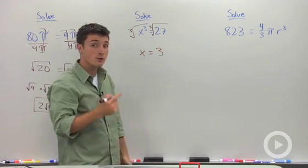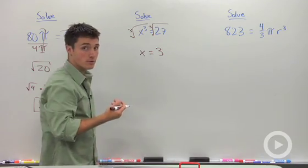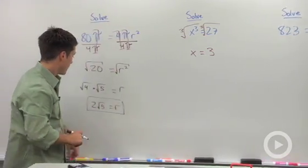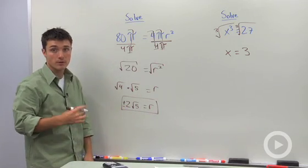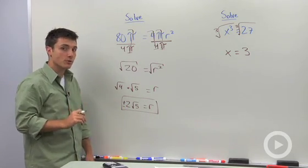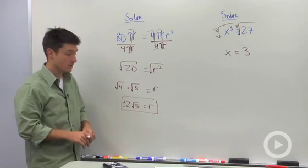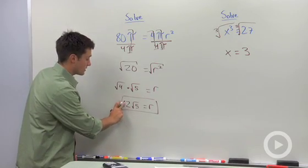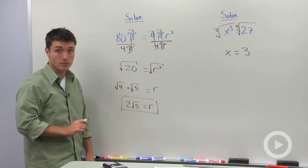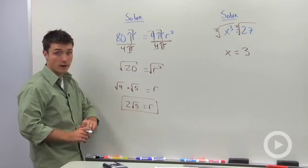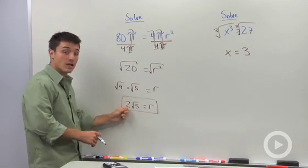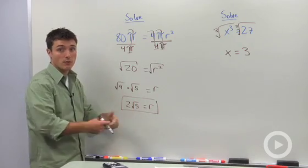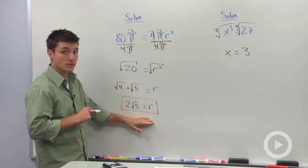Now if we go back to our first problem, something that we'll notice is that I could have said that this was positive or negative 2 times the square root of 5. Since we're in geometry and we're almost always talking about distances, we're going to almost always take the positive root. Because 2 times the square root of 5 times itself is 20. And if I took the negative of that, multiplied by itself, we'd end up with 20 as well. So there it could be two answers.